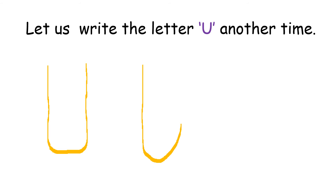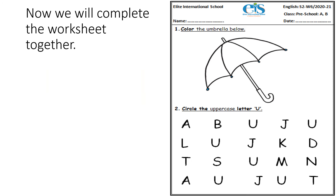Now we will complete the worksheet together. First, you color the umbrella in multi colors — the color that you want, the color that you like. Color it very nicely.